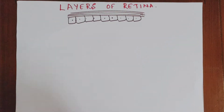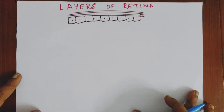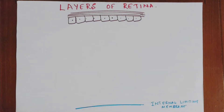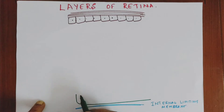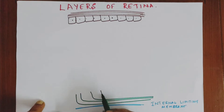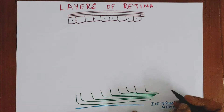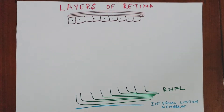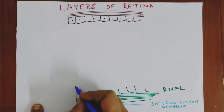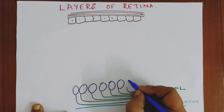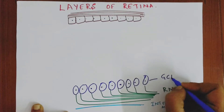After this, forget everything and come to the innermost layer, which is the internal limiting membrane. After the internal limiting membrane, there is the retinal nerve fiber layer — these are all the retinal nerve fibers coming from the ganglion cell layer, and they then form the optic nerve. So from which cells are these retinal nerve fiber layers arising? As I said, they are coming from the ganglion cells. So this is the ganglion cell layer.